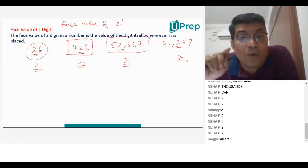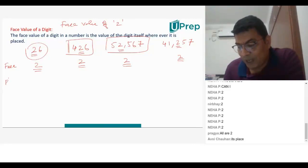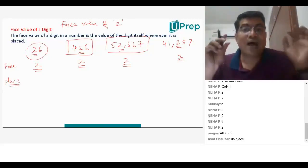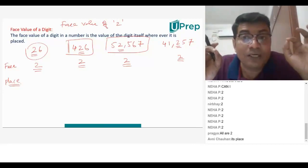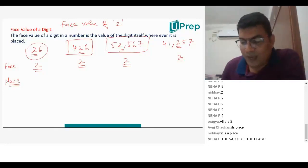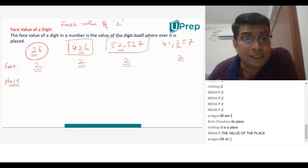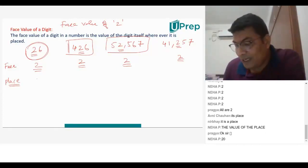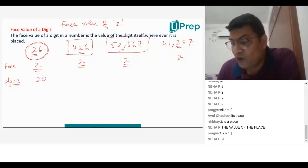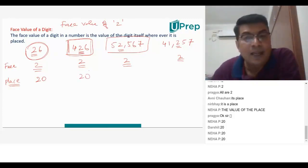Now let's understand place value. Place value means the value of a number changes depending on its position. In 26, what is the place value of 2? It's in the tens place, therefore its value is 20. In 426 also, the place value of 2 is in the tens place, so its value will be 20.